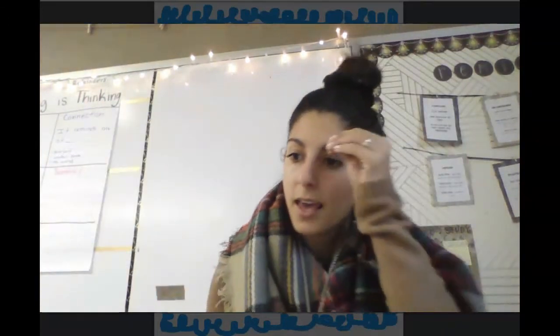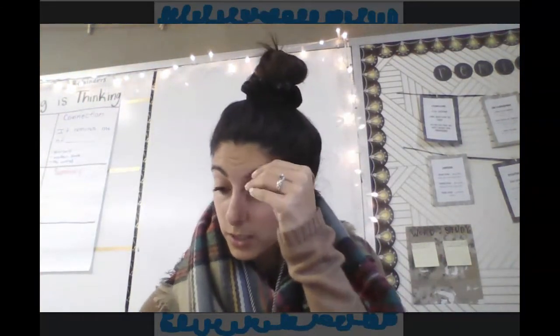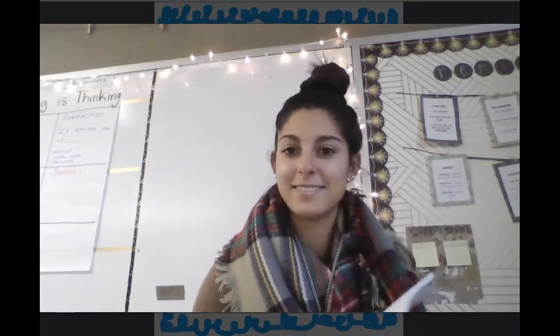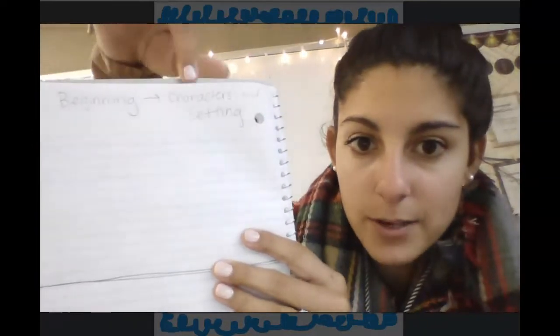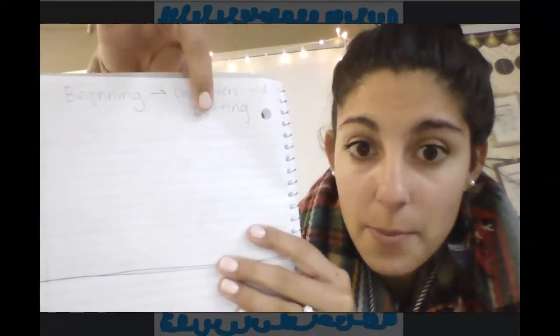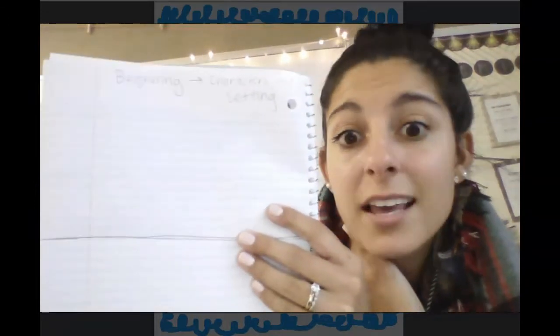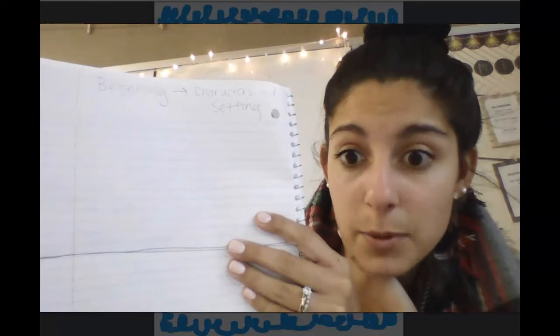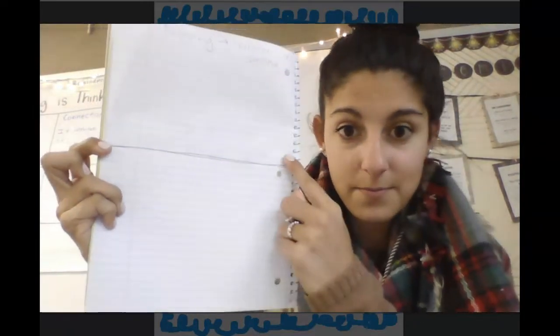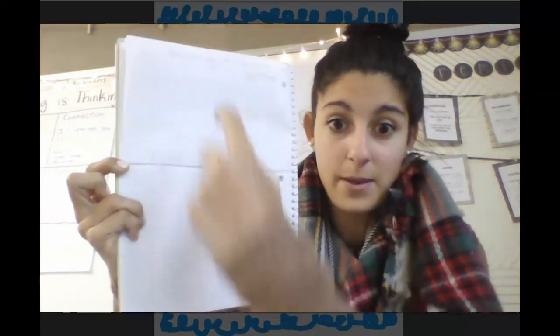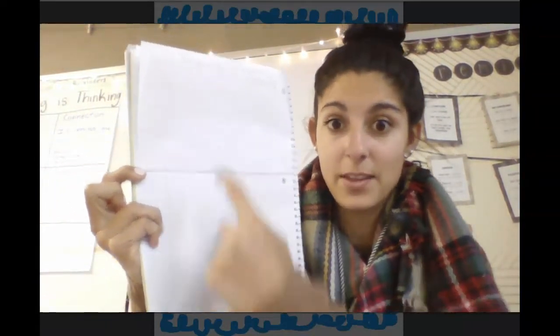I also want you to put the words 'character' and 'setting' so it reminds you that this is the part where you introduce the characters and setting. So it looks something like this — you've got 'beginning' at the top and the words 'character' and 'setting.' I also put a line to divide space for a picture on top and writing on the bottom.